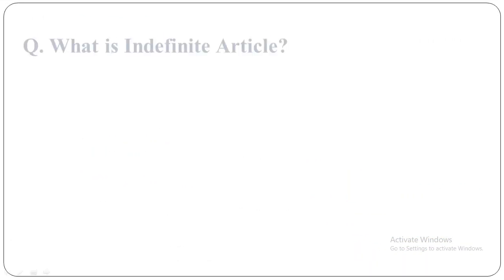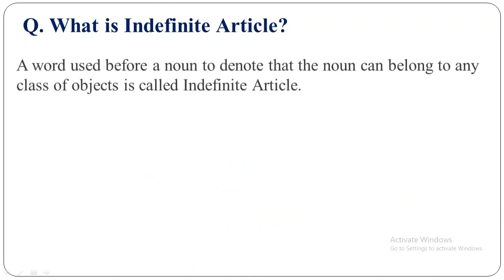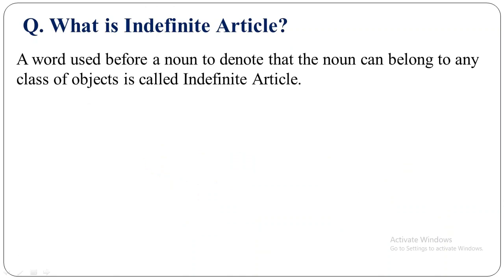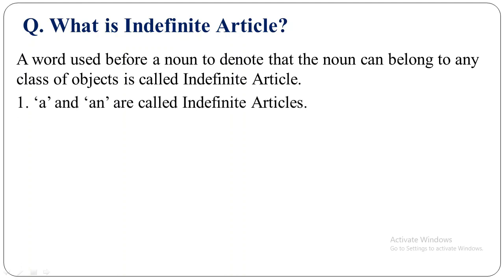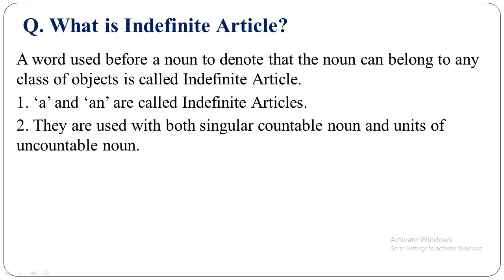What is indefinite article? A word used before a noun to denote that the noun can belong to any class of objects is called an indefinite article. A and AN are called indefinite articles. They are used with both singular countable nouns and units of uncountable nouns — you can use A or AN before a singular countable noun, but you cannot use it before an uncountable noun; however, you can use it before units of uncountable nouns.